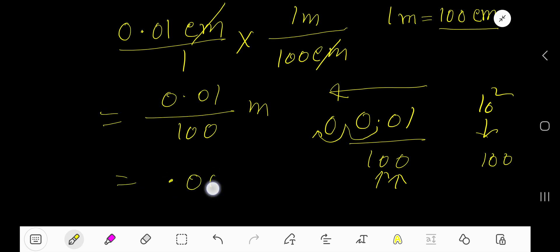So basically we are getting decimal 0.0001. You can add here one more zero to mean that this is less than one. So 0.0001 meter.